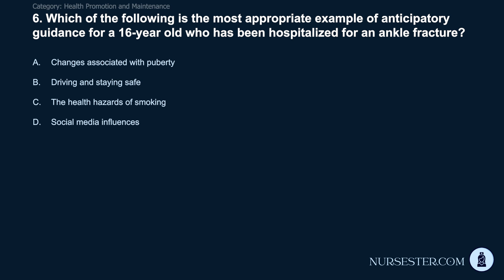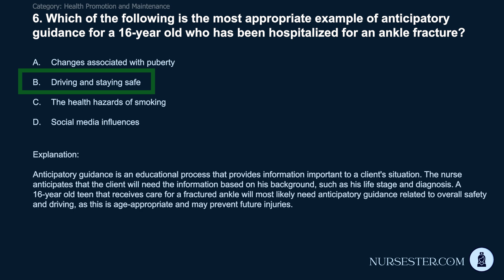Question 6: Which is the most appropriate example of anticipatory guidance for a 16-year-old hospitalized for an ankle fracture? A) Changes associated with puberty. B) Driving and staying safe. C) The health hazards of smoking. D) Social media influences. Correct answer: B. Driving and staying safe. Anticipatory guidance is an educational process that provides information important to a client's situation. A 16-year-old treated for a fractured ankle will most likely need guidance related to overall safety and driving, as this is age-appropriate and may prevent future injuries.